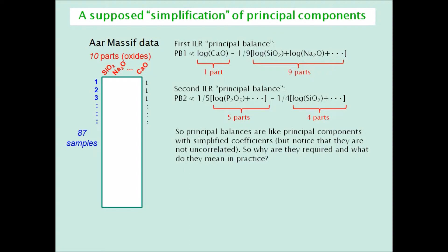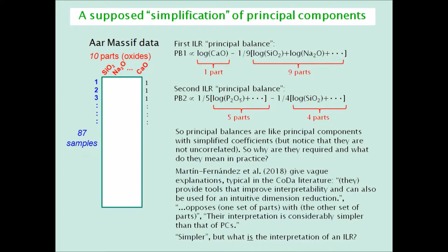For example, the second balance consists of the average of the five log-transformed numerator parts minus the average of the four log-transformed denominator parts. If this balance is used in further analysis, it would be necessary to know exactly what it is measuring. But the literature generally gives vague explanations — such as, by those same authors, and I quote: 'ILR balances provide tools that improve interpretability and can also be used for an intuitive dimension reduction,' by which they mean they could plot principal balance one versus principal balance two.